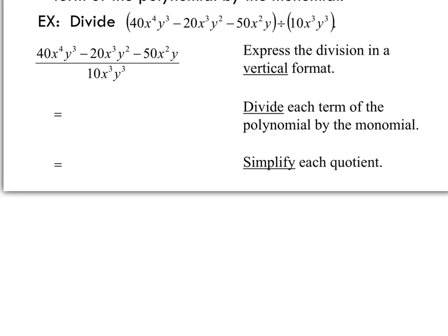Remembering that we have to divide everything on top: the three terms are connected with minuses between them, so we can't take one without taking them all. If we're going to divide, we have to divide every single one of those terms. You just write this problem in three separate pieces — each term on top gets divided by that monomial on bottom.